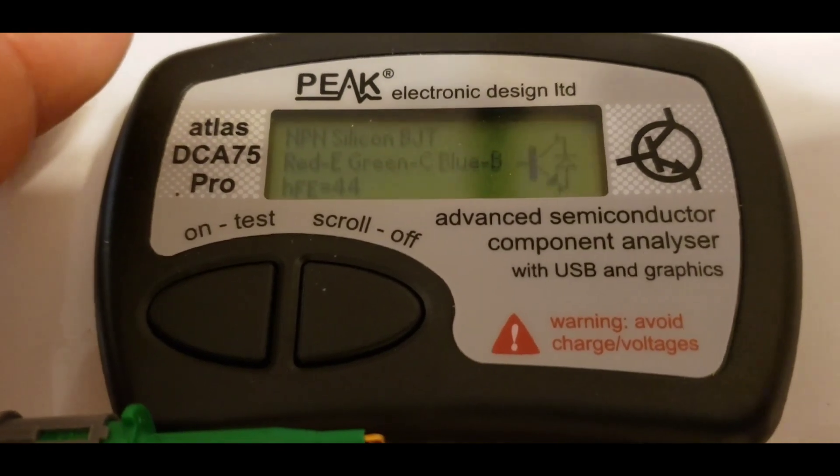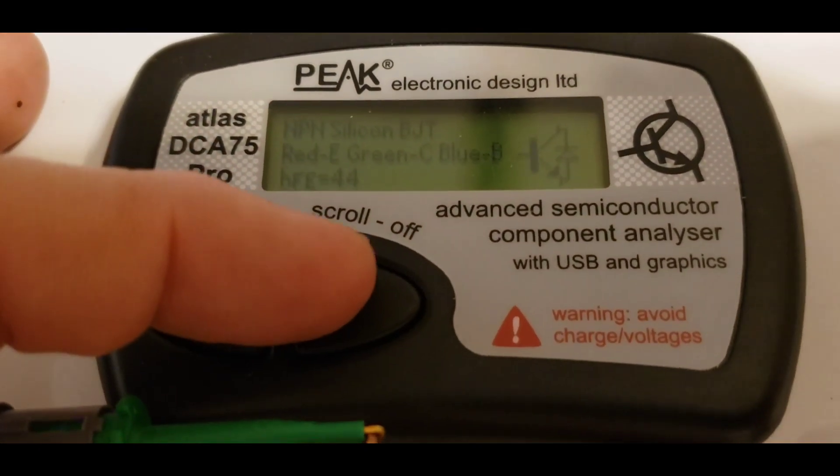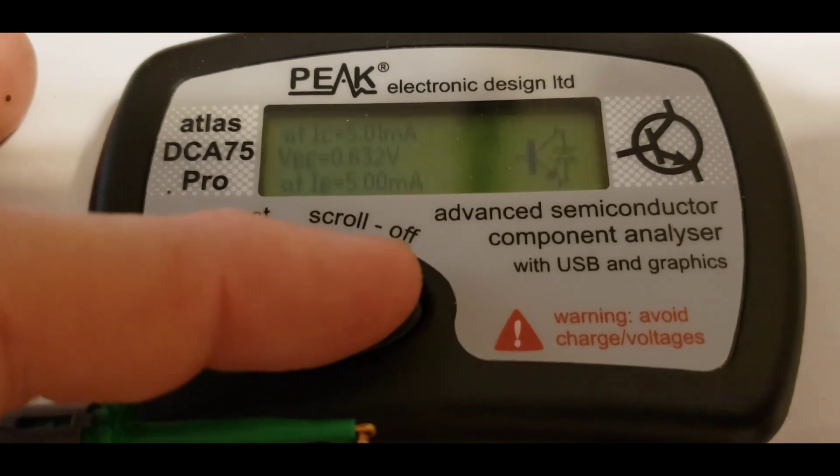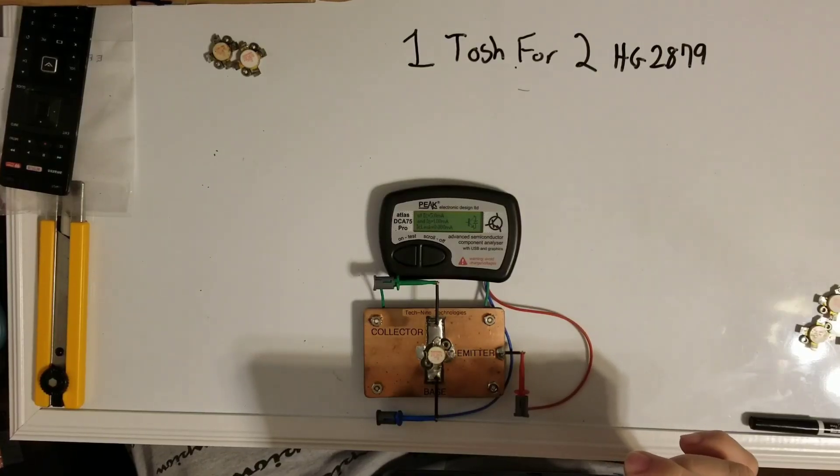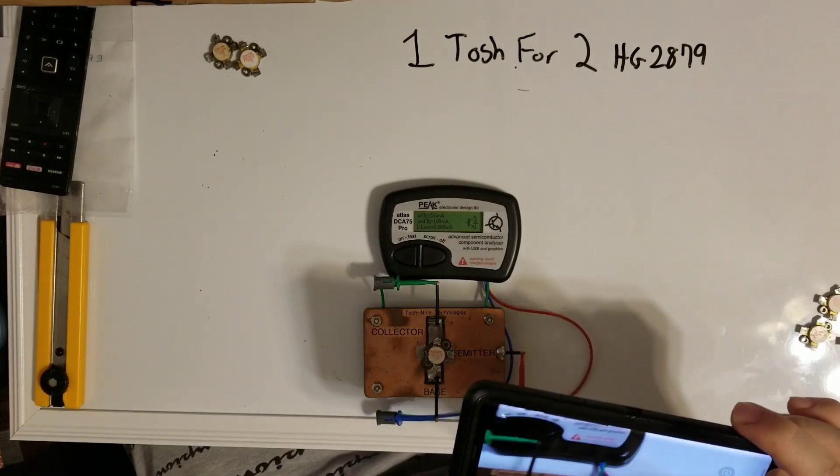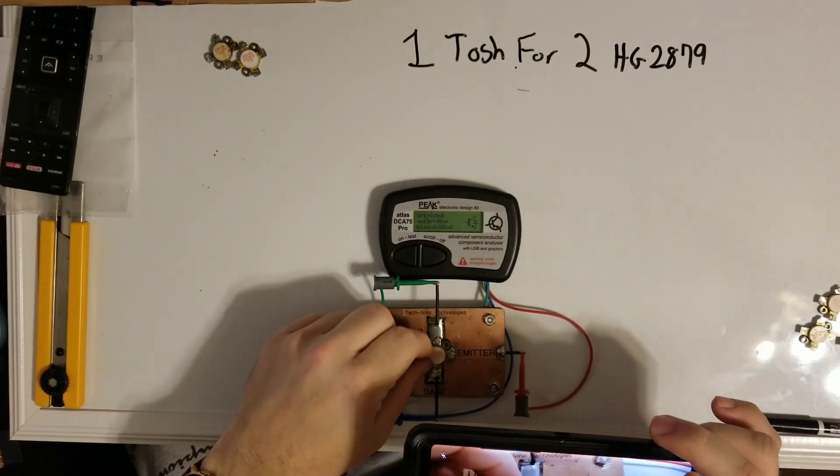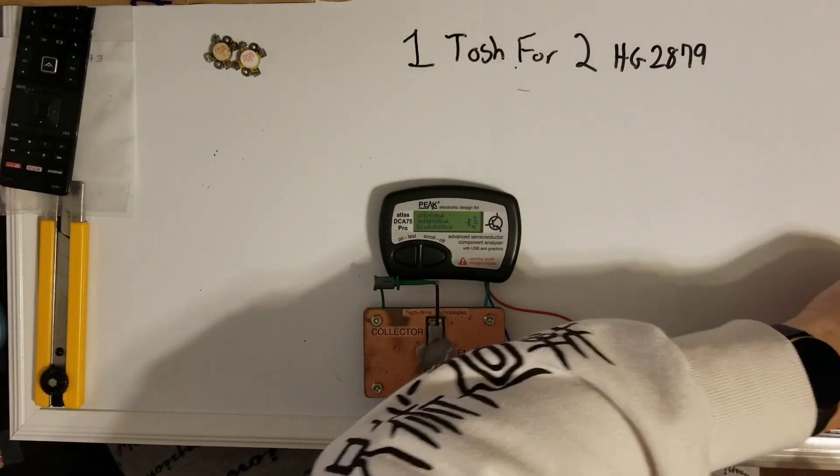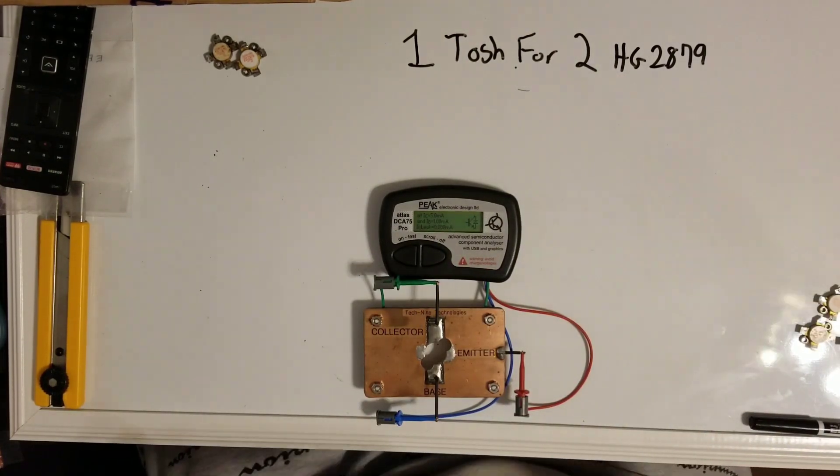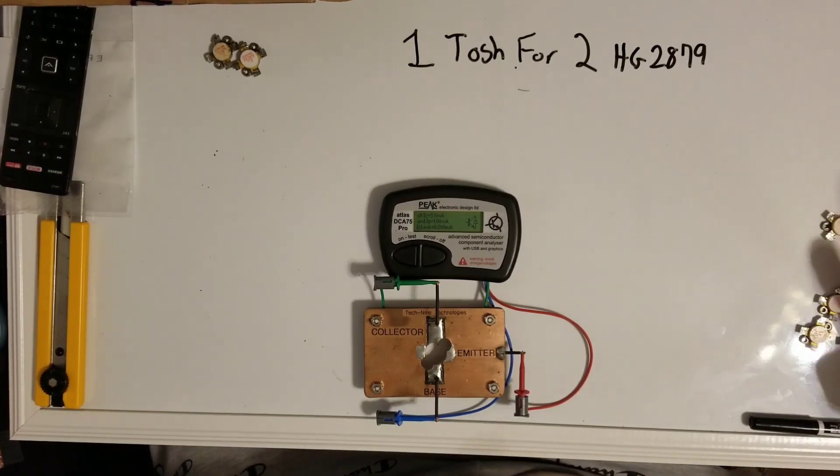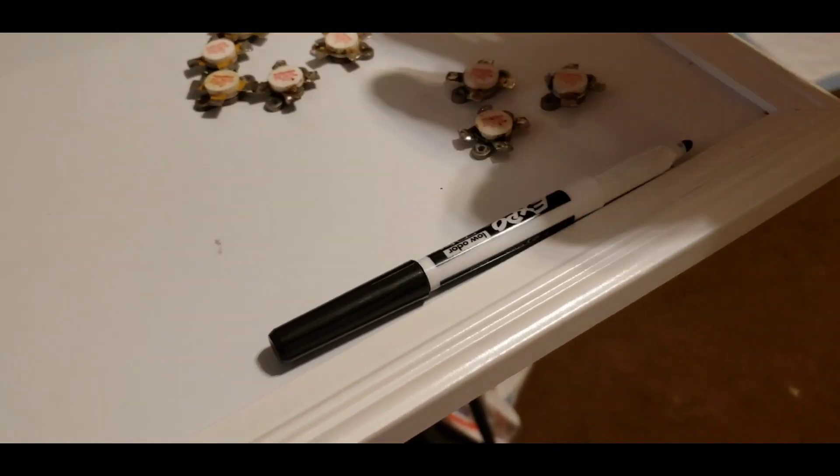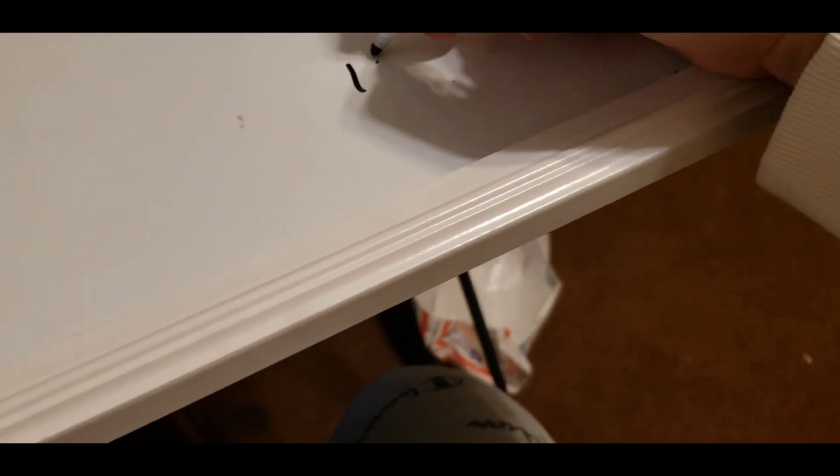But I wouldn't be able to, even if it was a high HFE, I wouldn't be able to charge like a full price for it. Look at that, it's the highest HFE of all of them so far. So this would be one I would have to still just sell for $50 because of that little issue with the leg. Because somebody would have to add a piece of braid to it or whatever. But something like this, you know, I may just keep this for myself, use it in a one transistor amp or something.